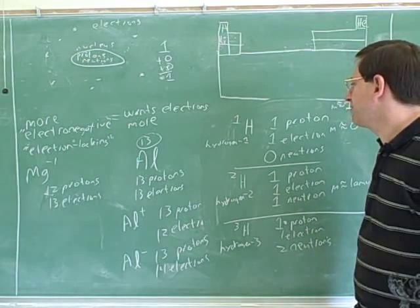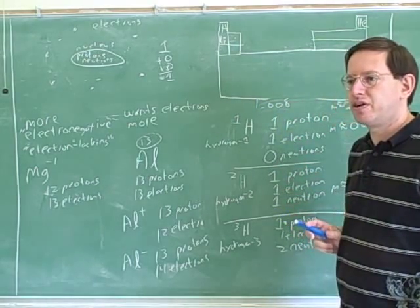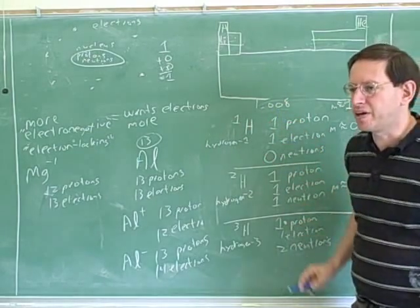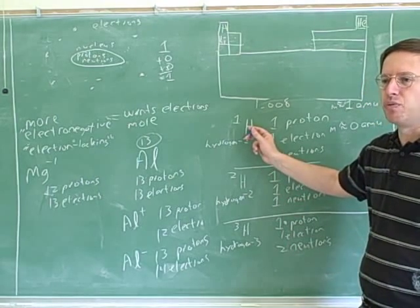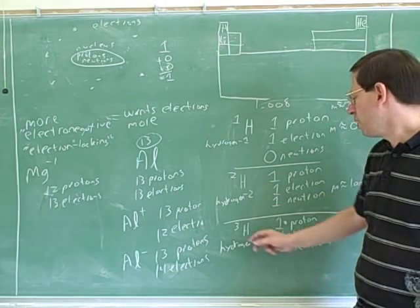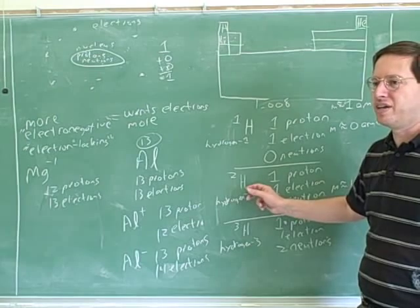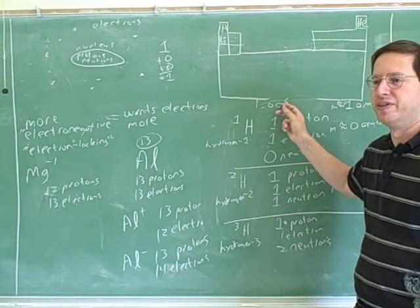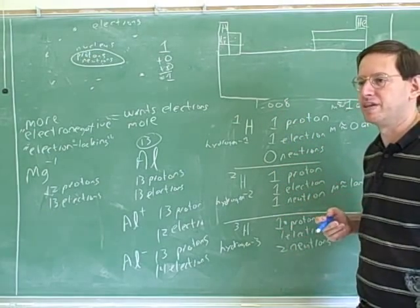If you look at hydrogen, the mass was 1.008 — so it's almost the same as 1, only a little bit bigger. The reason is that almost all of the hydrogen isotopes in nature are hydrogen-1. There's only a tiny fraction that's hydrogen-2, and an even smaller fraction that's hydrogen-3, so these get very little weight in the weighted average. Almost all the weight goes to hydrogen-1, so it's only a tiny smidgen above the number 1. But some of the other masses are a lot farther from the integers.